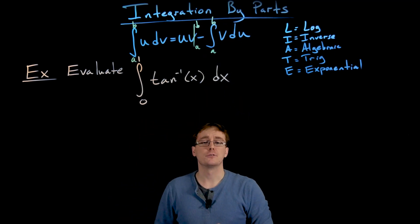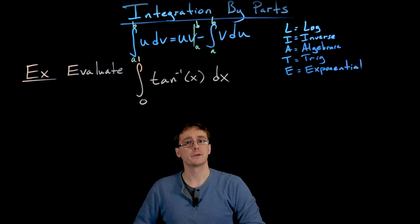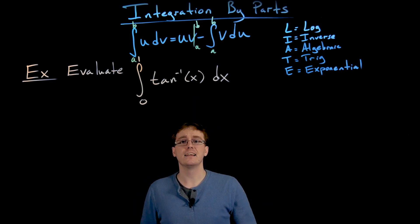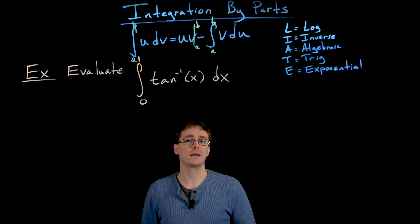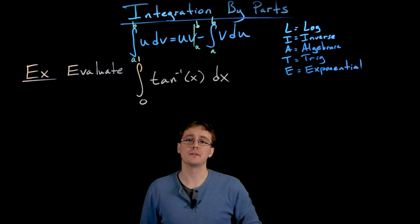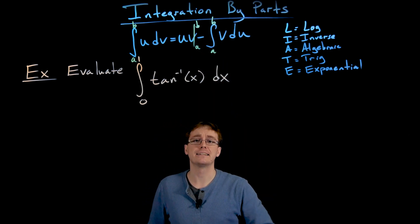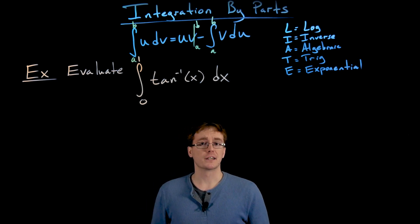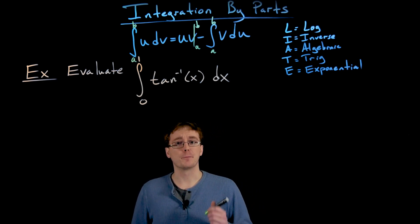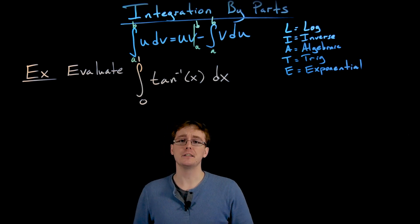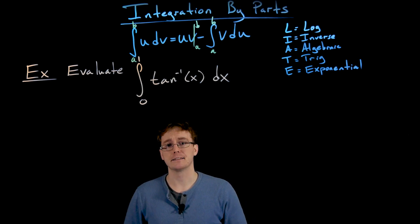We have to include the limits of integration in our integrals. Remember that the uv piece is like an antiderivative — we have to evaluate it at the upper limit as well as the lower limit of integration and take the difference between those two values. To get started, we need to find our pieces for the integration by parts formula: u, v, and du.